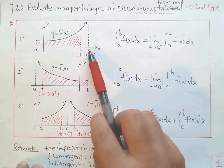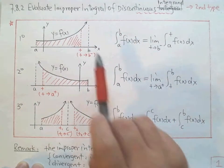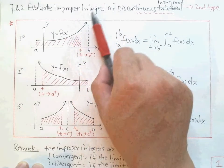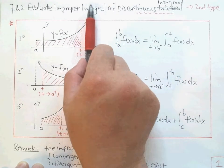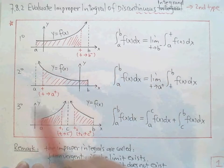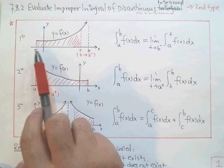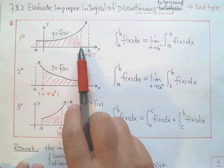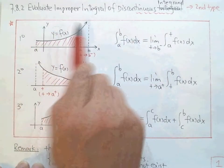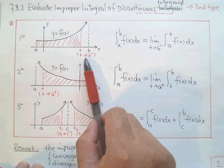How do you define this? We cannot define it as the original normal integral because we cannot see the area completely — as the value approaches b, the height of the function goes to infinity. We define it by picking a variable t and stopping there. From a to t, we do the integration first to find the area, then let t approach b from the left side.